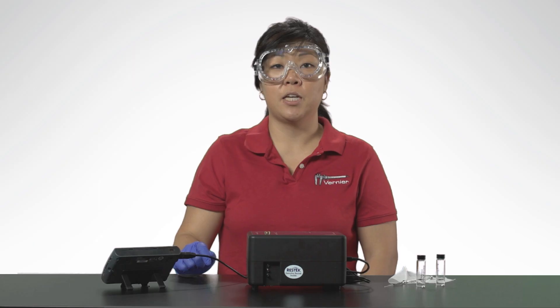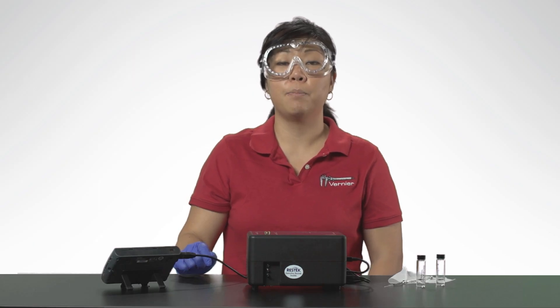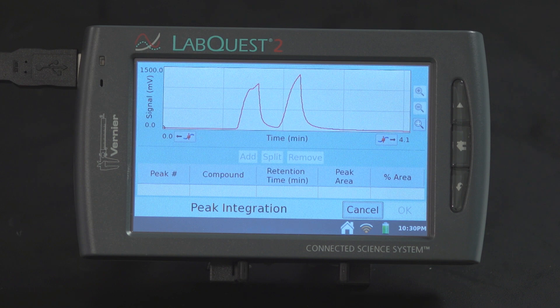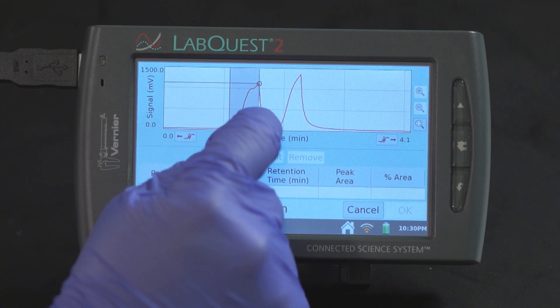To select and integrate the peak, drag across the graph from a little before the peak to point far enough to the right so that the entire peak is selected. Choose add.